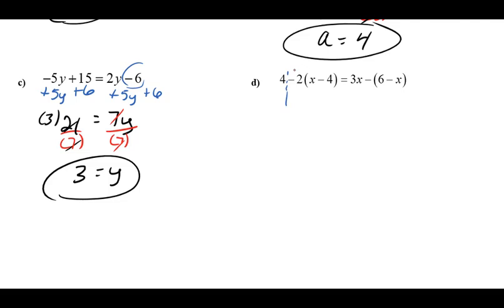So when I'm looking at these expressions on the left, I have two terms. So I'll be distributing the negative 2 to create terms of negative 2x and positive 8. So I have a 4 and a negative 2x and a positive 8. So my expression on the left side would be a negative 2x and then plus 12.